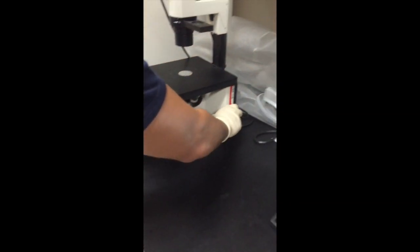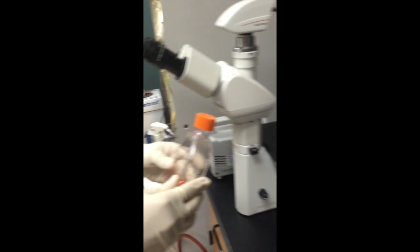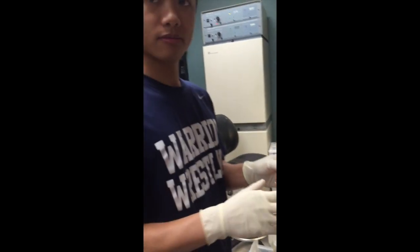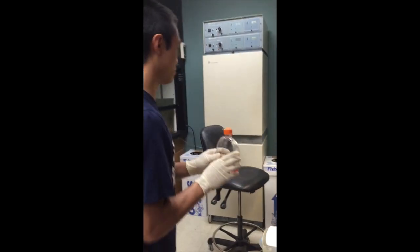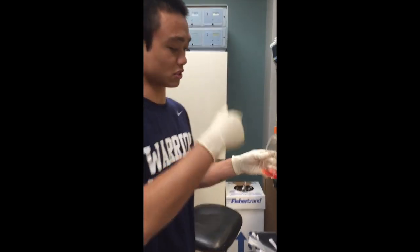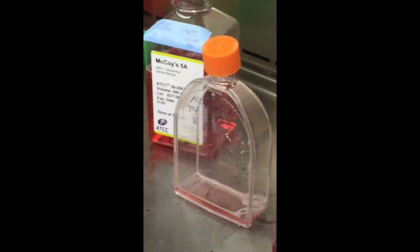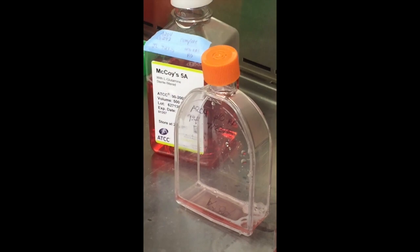So I'll just label my flask, put my name, the date, the cell line, and what we split it. So I would write one to eight. And the passage number. Passage number is just how many times it's been split or worked with. So since that originally said passage 10, I'll just write passage 11 on it. And put it back in the incubator.